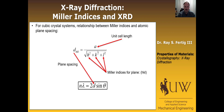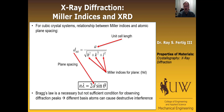Something important to point out: Bragg's law is a necessary but not sufficient condition for observing diffraction peaks. If I satisfy Bragg's law I might see a diffraction peak, but if I don't satisfy it I absolutely won't. Sometimes basis atoms inside the unit cell cause destructive interference, wiping out planes you'd otherwise expect to see just from plugging Miller indices into the equation.